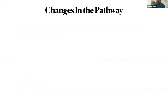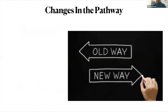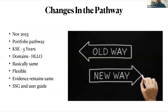Some words about changes in the pathway — there's not much change apart from the nomenclature. The GMC has announced that from 30th November onwards it will be called the Portfolio Pathway, and they will be checking your knowledge, skills, and experience. The recency of evidence remains the same — five years. The domains now have a new name: high level learning outcomes. The process of collection, compilation and submission of evidence essentially remains the same. Please be familiar with the latest specialty-specific guidance and the user guide on the GMC website.